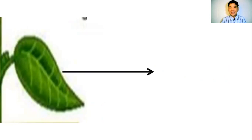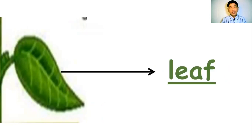The next part of the plant — what do you call this part? We call it a leaf. If only one, it's leaf. But if more than one, it will be leaves. Everybody say leaf.